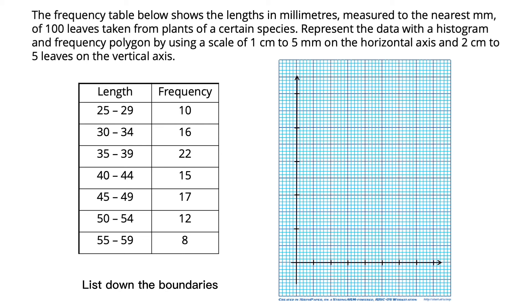List down the boundaries on the horizontal axis. 1 cm to represent 5 mm start from 24.5, 29.5, 34.5, 39.5, 44.5, 49.5, 54.5, and 59.5. This is the length of leaves in millimeters.